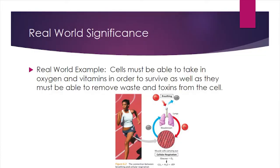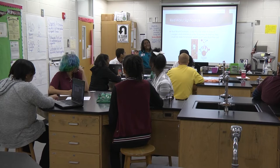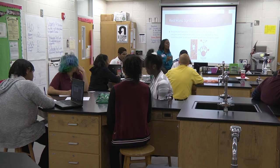Real-world significance: our body needs oxygen to survive. It's very important that oxygen can enter the cell. It is equally important that carbon dioxide — what we breathe out — is able to exit the cell, because if it doesn't, it becomes very toxic to the cell and you would eventually die. That's an example of why it's important that the cell membrane is functioning correctly.